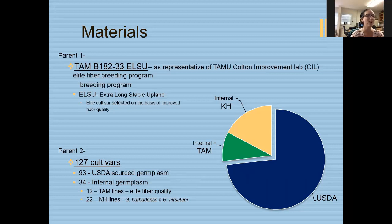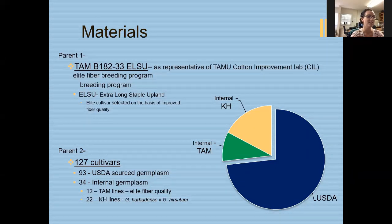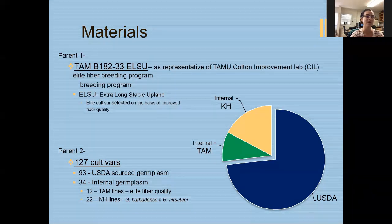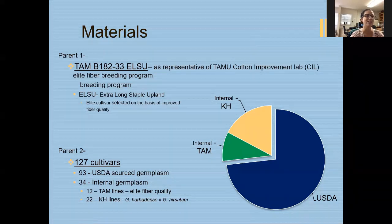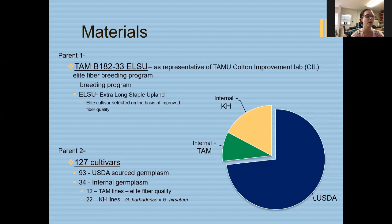TAM B182-33 is an elite fiber line, competitive with many of our commercial varieties. The ELSU designation stands for extra long staple upland, developed over time with a fiber length higher than many commercial varieties. My second parent consists of 127 different cultivars: 93 were sourced from the USDA germplasm, while 34 were internal to our CIL. Of those 34, 12 are related lines to our representative parent — TAM lines that are also elite fiber quality — and 22 are intraspecific, a barbadense-hirsutum cross produced by one of our previous graduate students.